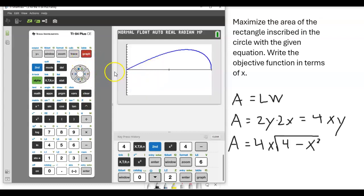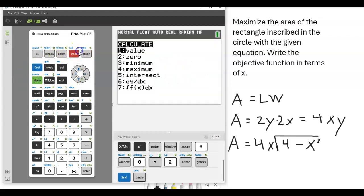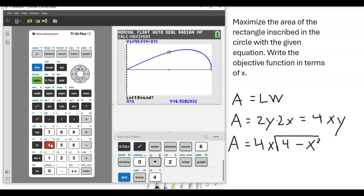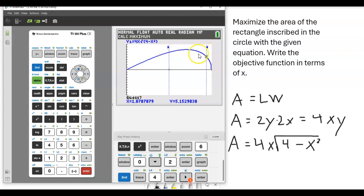Now I go back to graph here, and here is my function. So I'm trying to find what x value is going to give me this maximum y value on top of this curve. So I can use the maximum function in order to do this. So I'm going to do second trace, which is our calculate, number 4. So the first thing it asks for is a left bound. I just have to make sure this cursor is on the left side of the peak of this hill. So I'm going to hit enter. And then it asks for a right bound. So I just want to make sure it's somewhere on the right side of this peak.